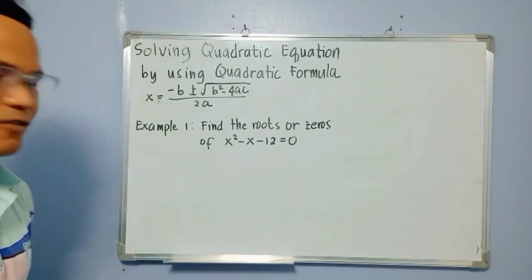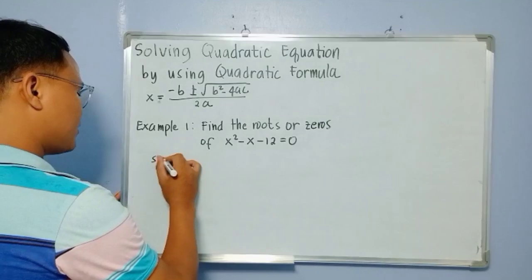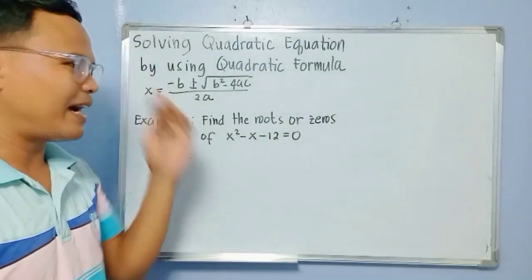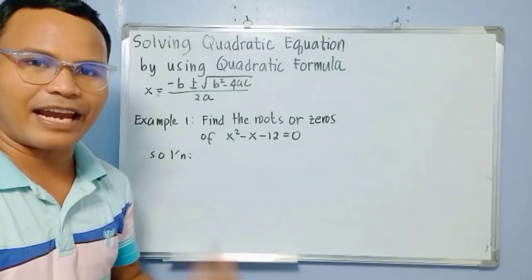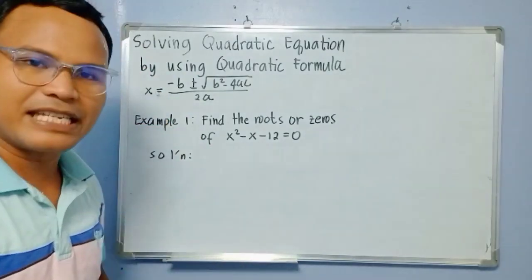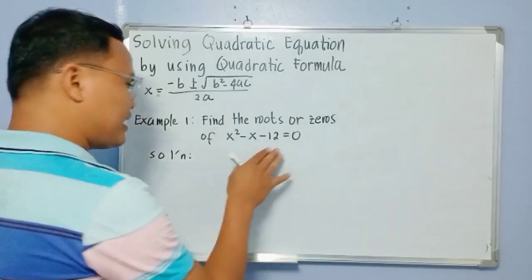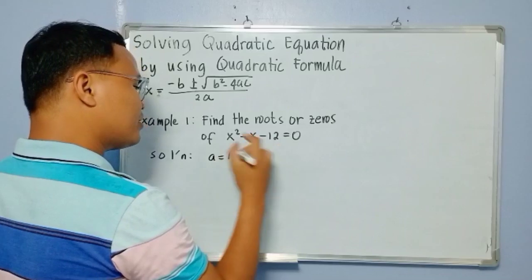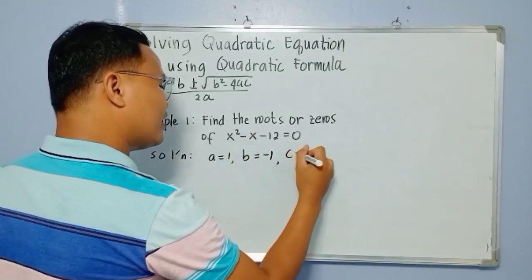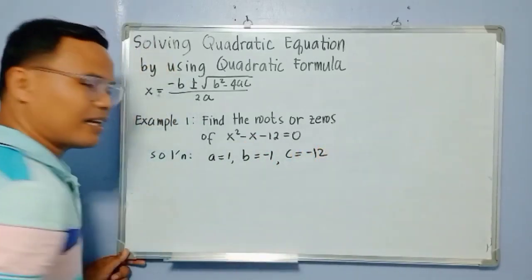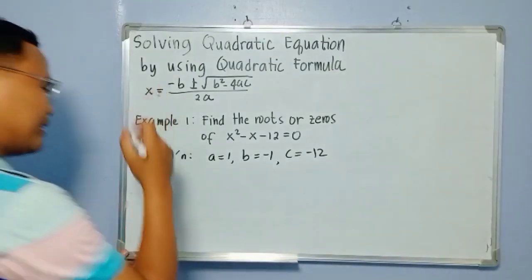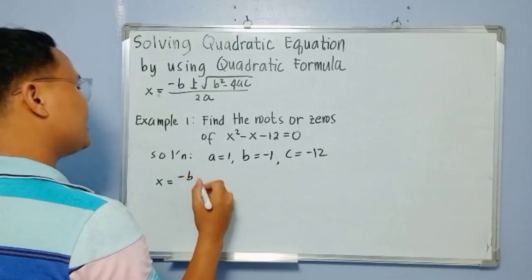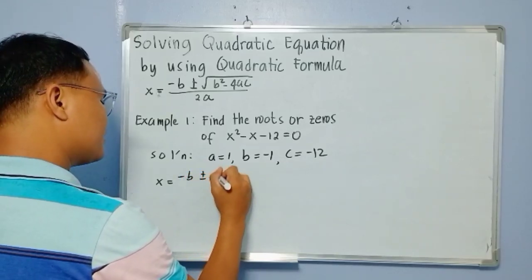For the solution, if we use the quadratic formula, we are going to identify first the values of a, b, and c in the equation. Here the value of a is equal to 1, the value of b is equal to negative 1, and the value of c is equal to negative 12.